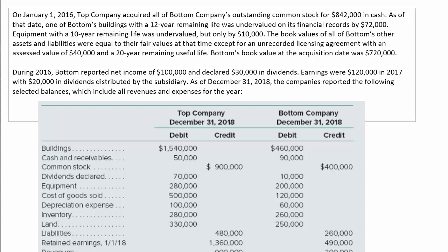Bottom's book value at the acquisition date was $720,000. Now the second paragraph: During 2016, Bottom reported net income of $100,000 and declared $30,000 in dividends. Earnings were $120,000 in 2017, with $20,000 in dividends distributed by the subsidiary. As of December 31, 2018, the companies reported the following selected balances, which include all revenues and expenses for the year — those results are shown here for 2018.